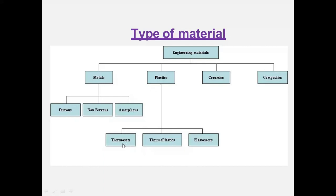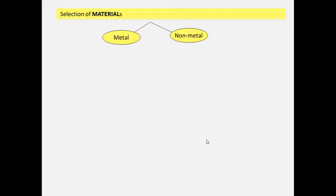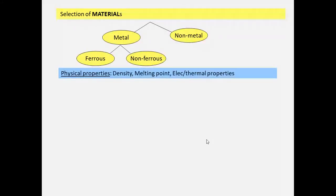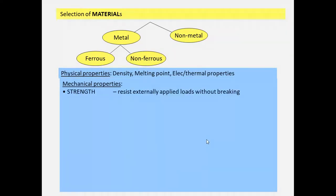On selection of materials, the material is classified into metal and non-metals. The metals have a classification of ferrous and non-ferrous.